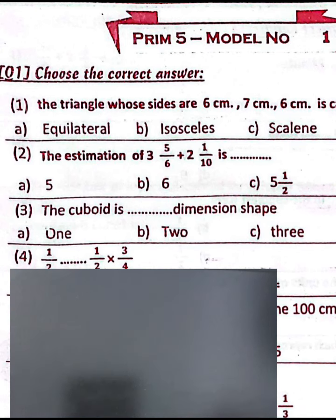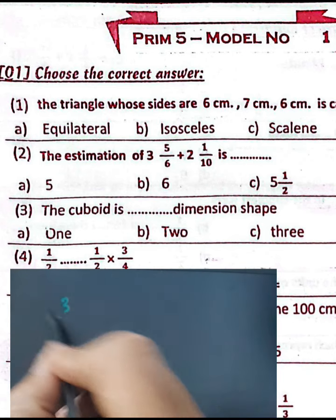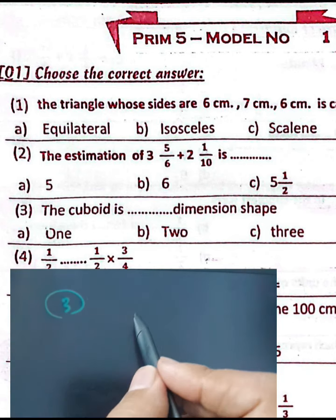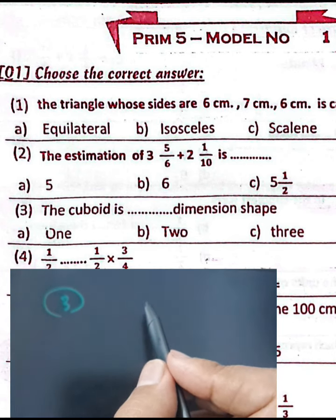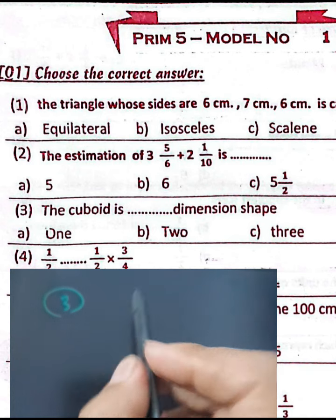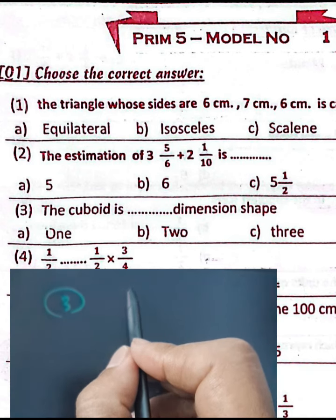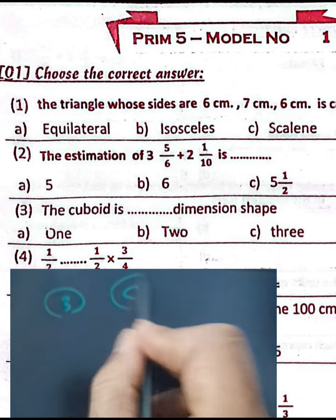Question number three: a cuboid is a three-dimensional space shape. It has three dimensions — length, width, and height. Choose letter C.